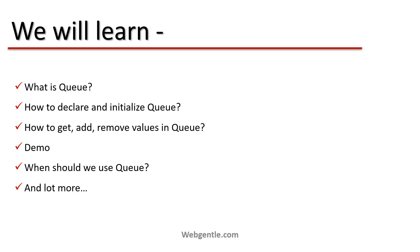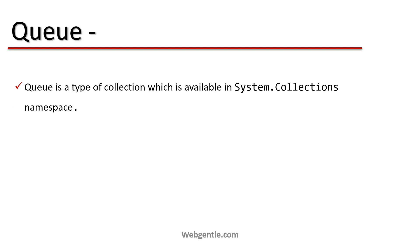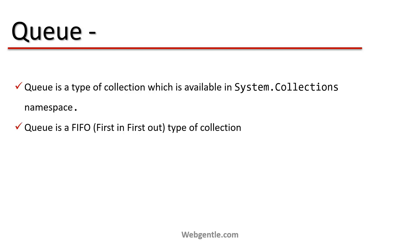Queue is a type of collection available in the System.Collections namespace. So basically this collection class is available in System.Collections namespace, and if you are going to work with this class you have to include this namespace in your project. Queue is a FIFO type of collection — FIFO means First In First Out. This is a special type of collection which works in this order: first in, first out.